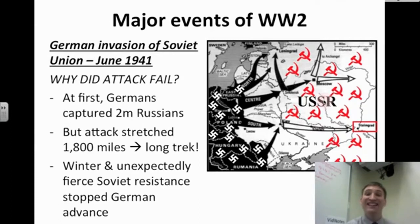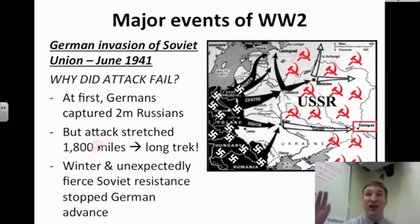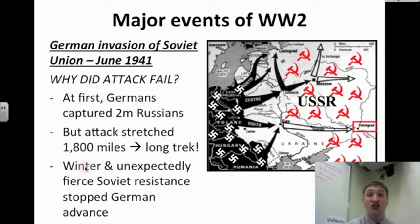Why did the German attack fail? At first, it didn't — the Germans captured 2 million Russians. But they did not take into account how large the USSR is. It stretched 1,800 miles, like traveling to Dallas, Texas. That's a long trek. The harshness of winter and an unexpectedly fierce Soviet resistance ultimately stopped the German advance.